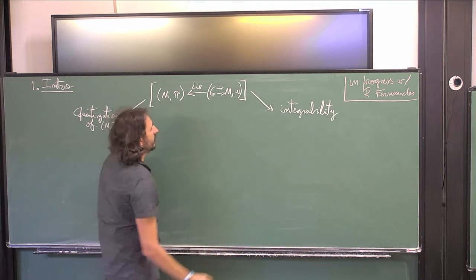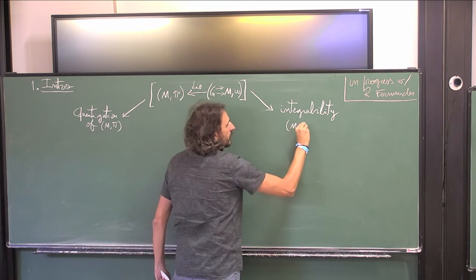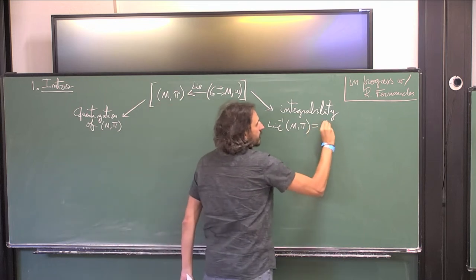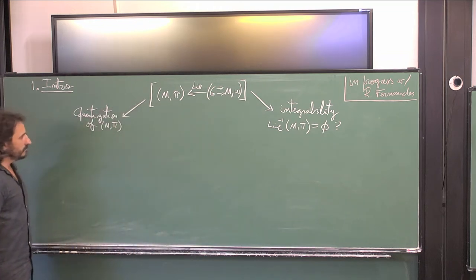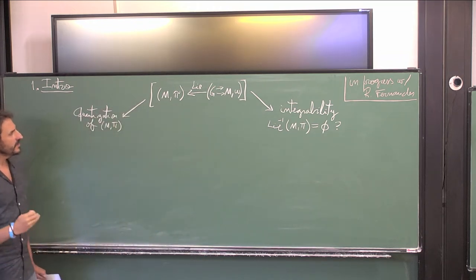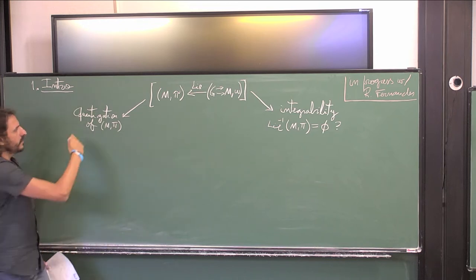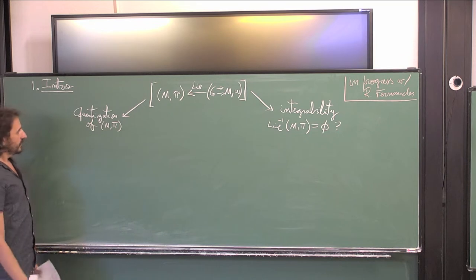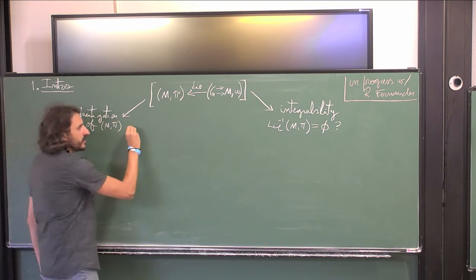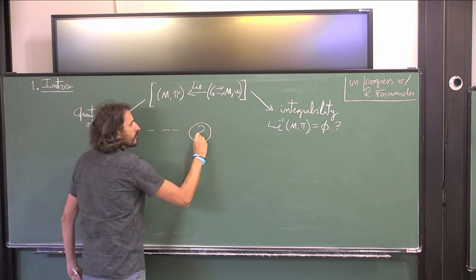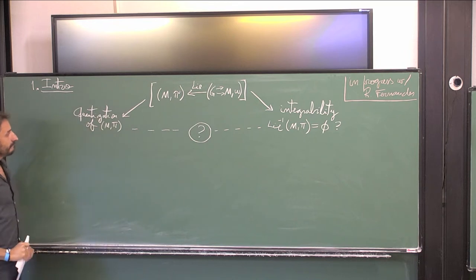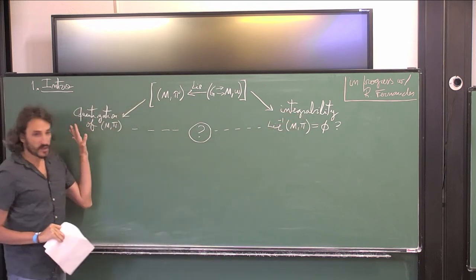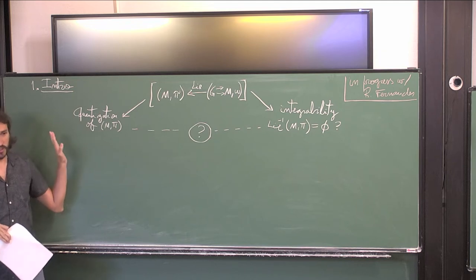By integrability, I mean the question of whether, given a Poisson manifold, there is some symplectic groupoid integrating it or not. Perhaps in the 80s these two things were pretty much related, but eventually my understanding is that they grew apart. The aim of this talk is to establish a concrete connection between these two things. I will be assuming more familiarity with the quantization side, and will try to focus more on the ingredients of integrability.